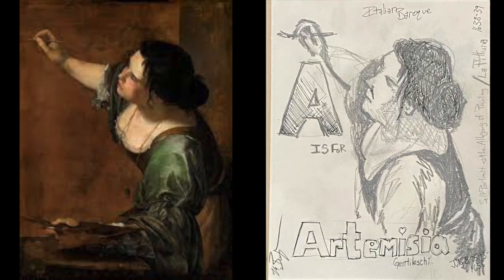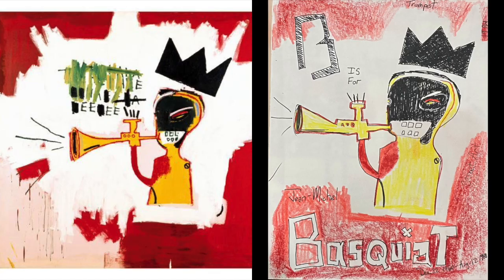So here is my ABCs of art — some of my own illustrations, as well as the masterworks that inspired them. Keep in mind, these are sketches and plans, not finished things. Enjoy. A is for Artemisia Gentileschi, an Italian Baroque painter. B is for Jean-Michel Basquiat, graffiti artist.